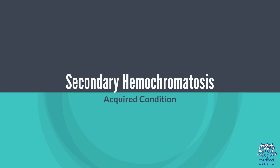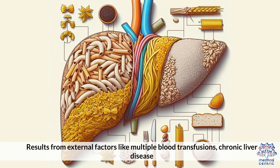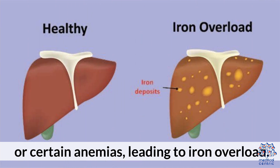Secondary Hemochromatosis — Acquired Condition: Results from external factors like multiple blood transfusions, chronic liver disease, or certain anemias, leading to iron overload.